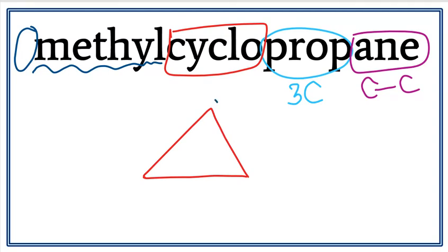Because this can be the first carbon, or this, or this. We can attach the methyl anywhere. So let's attach the methyl here. So this is the structure for methylcyclopropane.